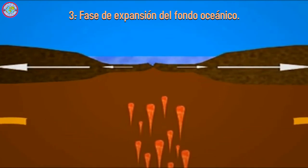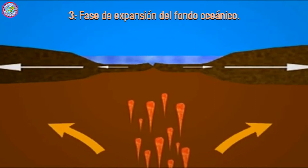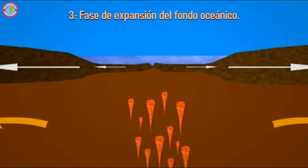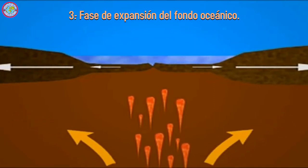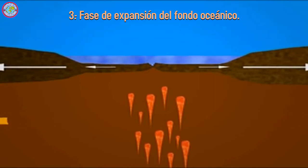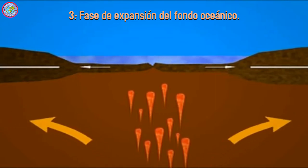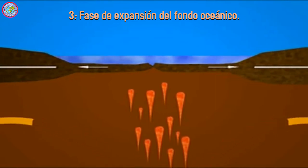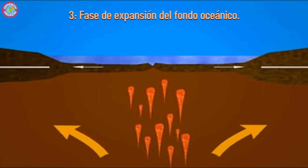La actividad en estos bordes divergentes genera nueva litosfera gracias a los materiales que salen por la dorsal. Así, el fondo oceánico se expande y las masas continentales de sus extremos se separan.